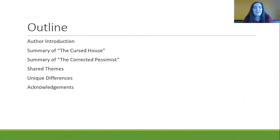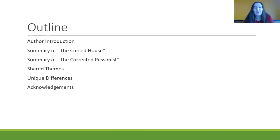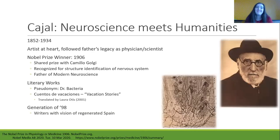To give you a preview of what we're going to be talking about today: we'll start with an author introduction — who is Santiago Ramón y Cajal — then a quick summary of both stories in focus: 'The Cursed House' (La Casa Maldita) and 'The Corrected Pessimist.' Then we'll discuss shared themes found in both stories, some unique differences, and then acknowledgements and works cited.